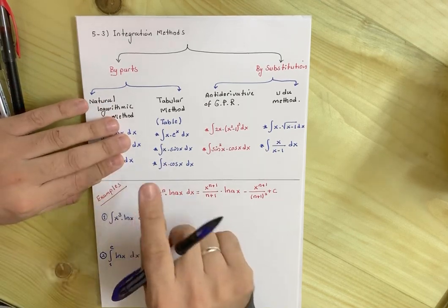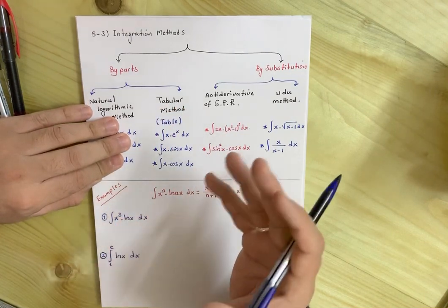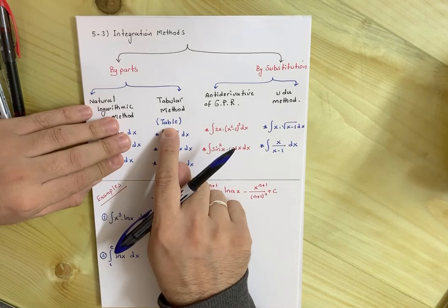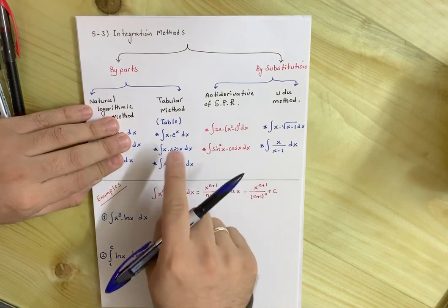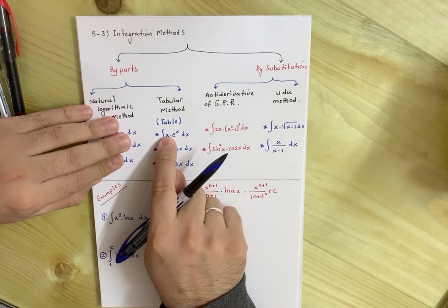Keep this one in your mind. Come here, second, tabular method. Tabular method, it's obvious from its name that it depends on a table. Which table? Follow me, later you'll know.